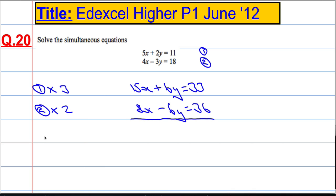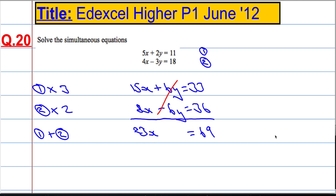What I'm going to do is add equation 1 and equation 2. So 15x plus 8x is 23x. 6y plus minus 6y is 0, so they cancel out — which is exactly what I wanted. And then 33 and 36 is 69. So 23x is 69.